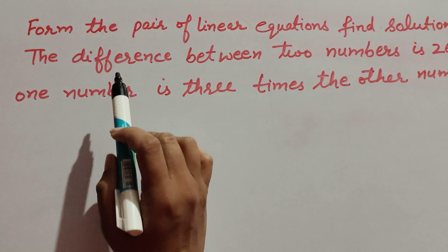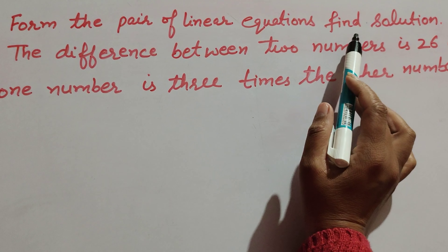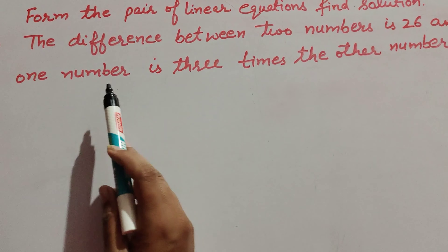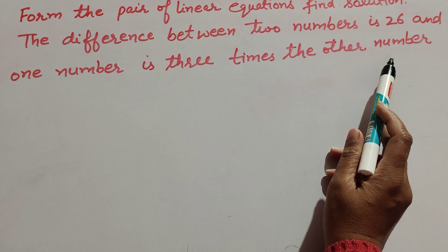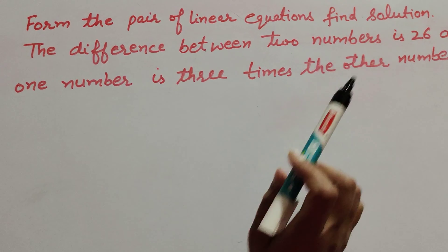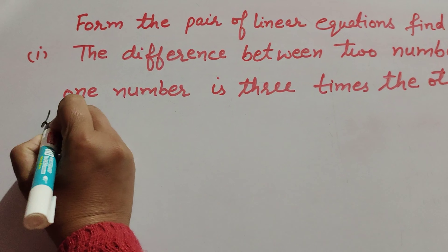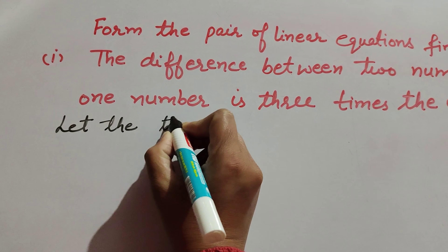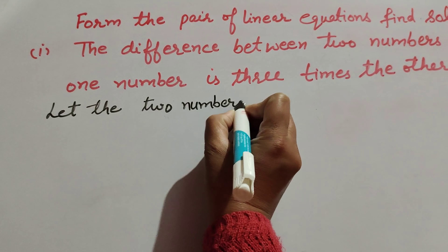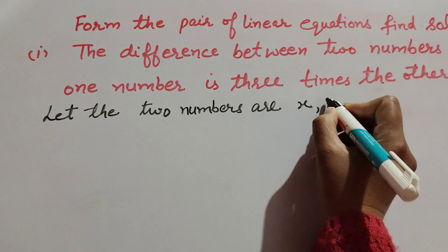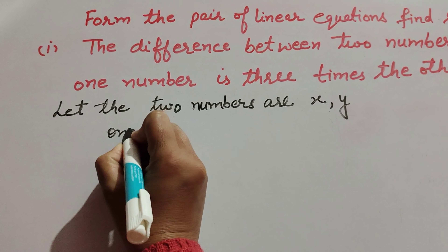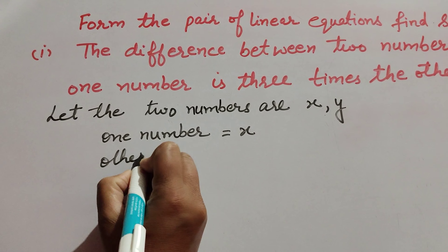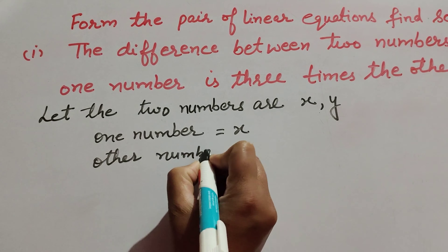Hello friends, welcome to my channel. In this video we discuss forming the pair of linear equations and finding the solution. In the first part, the difference between two numbers is 26 and one number is three times the other. So let's start. We suppose the two numbers are x and y, where one number equals x and the other number equals y.